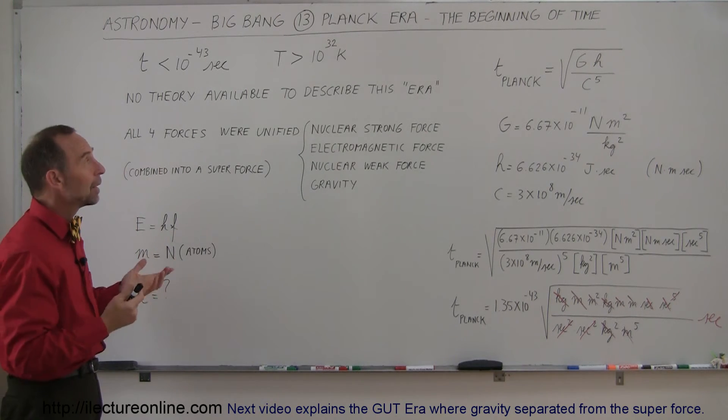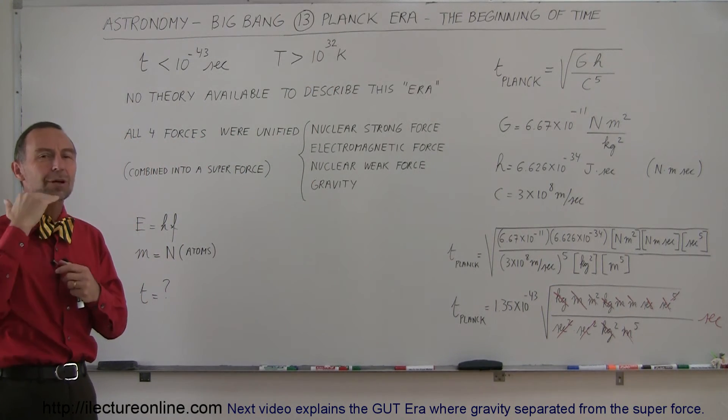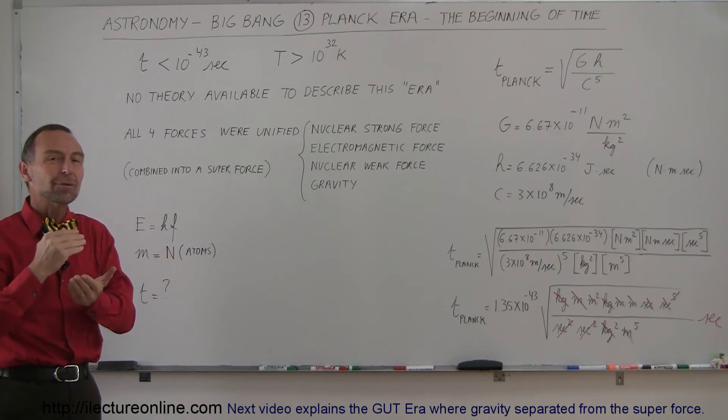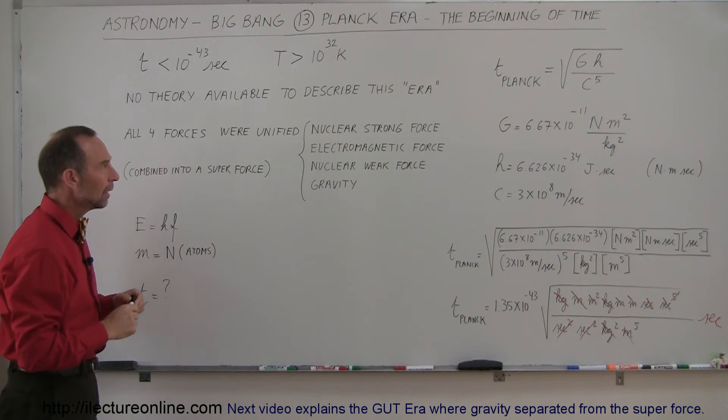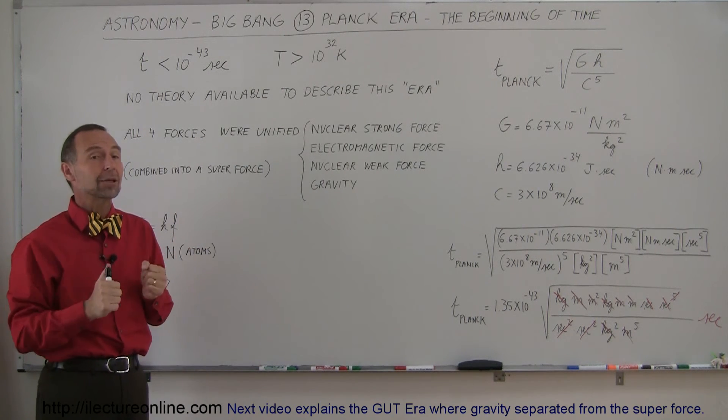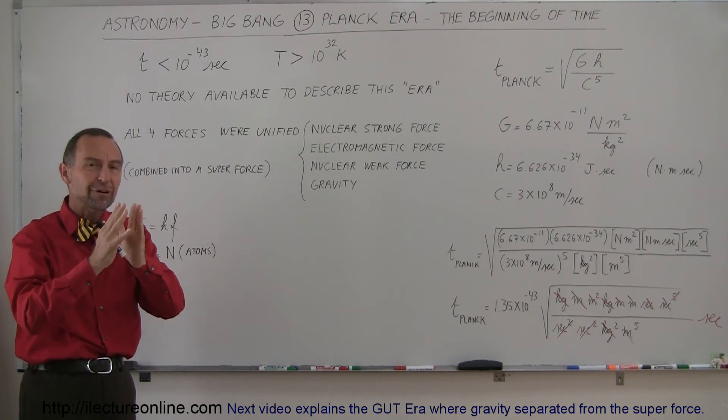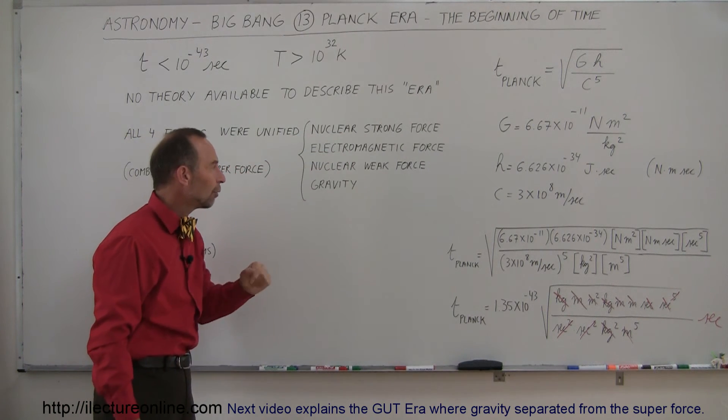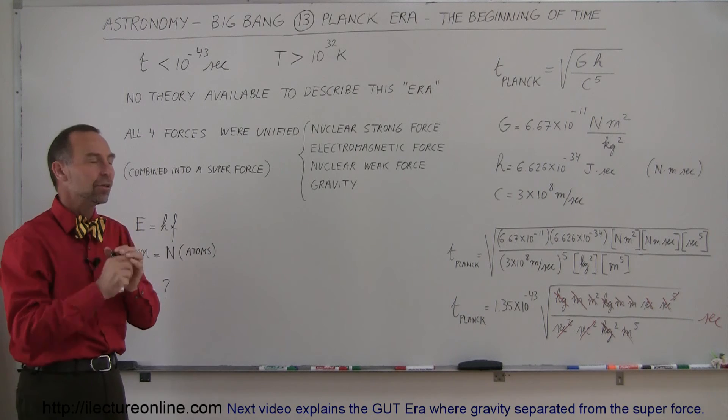So what was it like at that time? Well, they assumed that the temperature going back in time must have been 10 to the 32 Kelvin, an incredibly high temperature. And the time when the universe started was at 10 to the minus 43 seconds, based upon the assumption that that was the smallest time possible. Do we have any physics to describe that era? Not at all. There's nothing that we can do to describe what it must have been like in the universe. The assumption was that all the four forces that we understand today must have been unified into a single super force. That means the nuclear strong force, the electromagnetic force, the nuclear weak force, and gravity all were combined into a single unitary force existing in the universe.